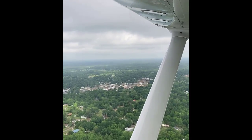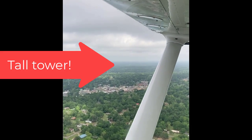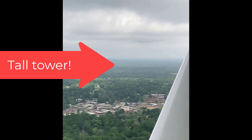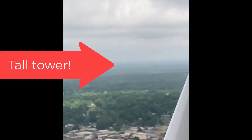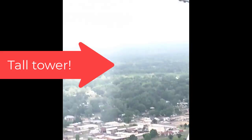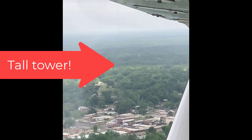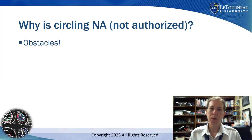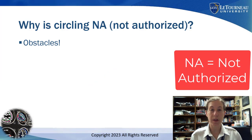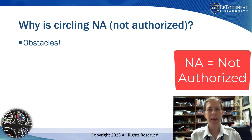Here you can see the tower — I'm zooming into it here — that is right close to the airport. So that hopefully showed you why circling is not authorized, as one example at Vivian.